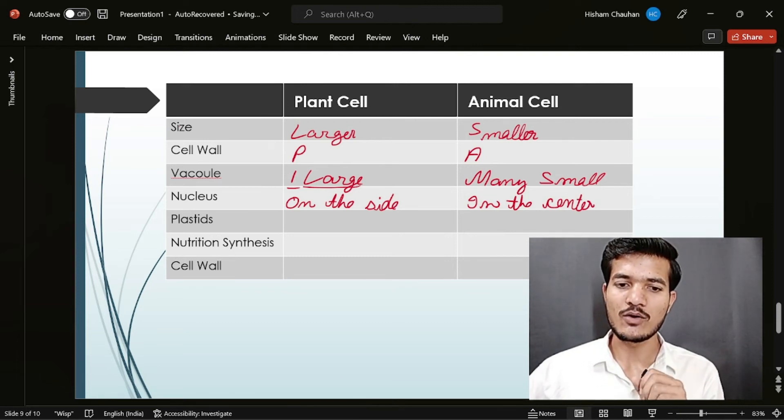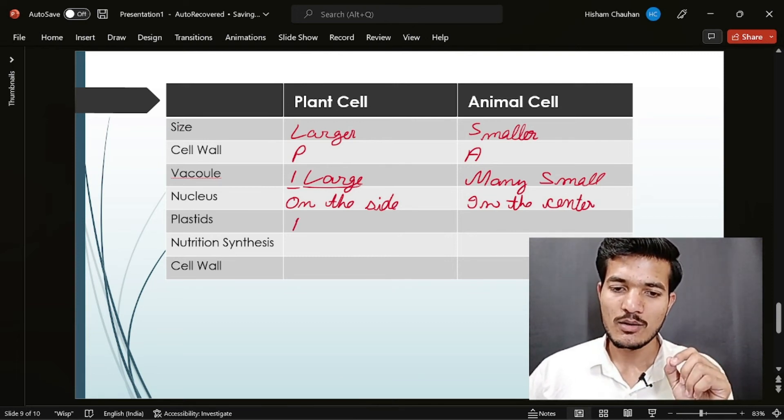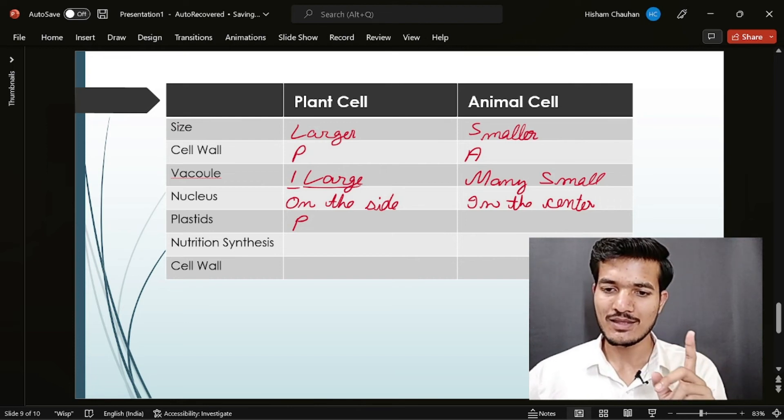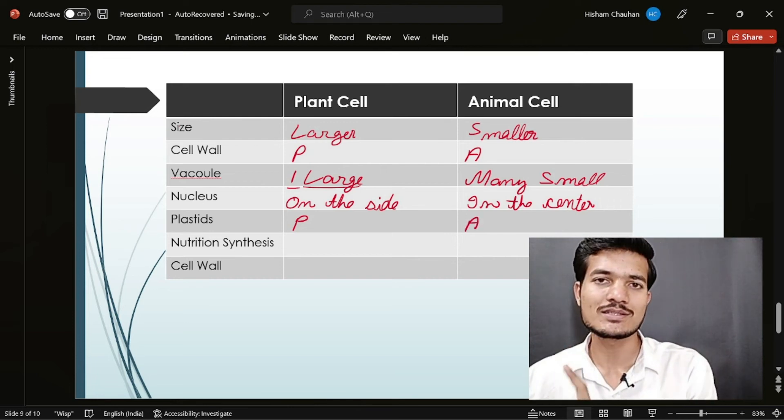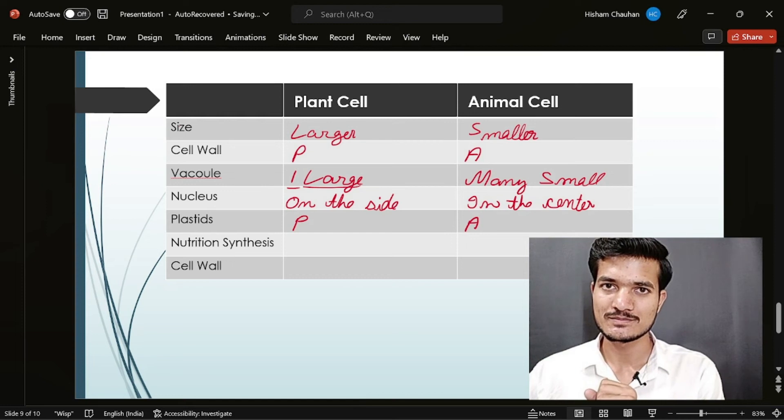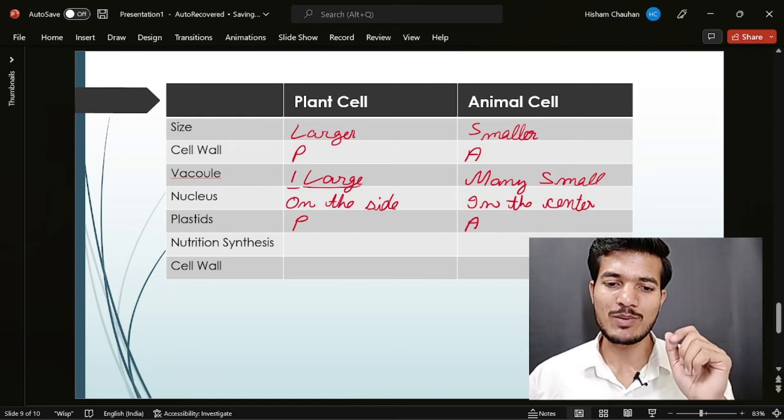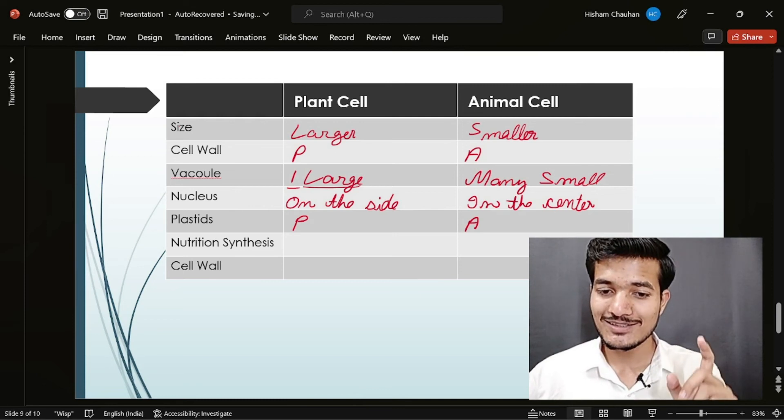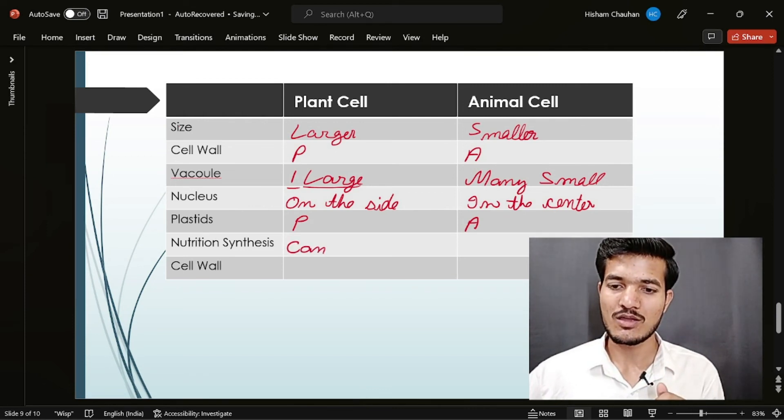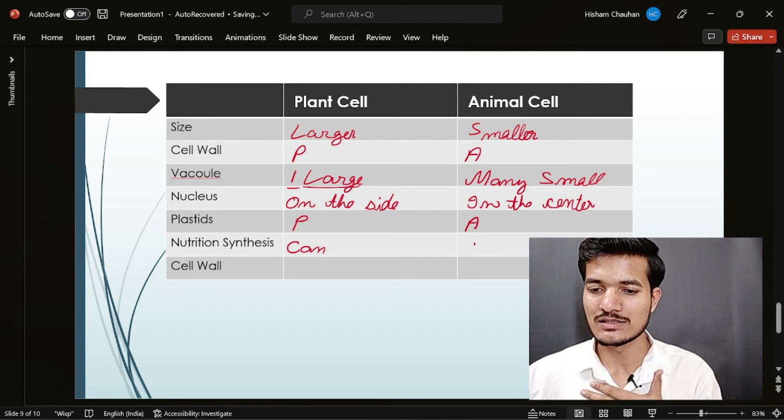Okay. Now plastids were present in the plant cells and absent in the animal cells. Now due to this presence of plastids in the plant cells, plant cells can synthesize their nutrition, which we animals can't.